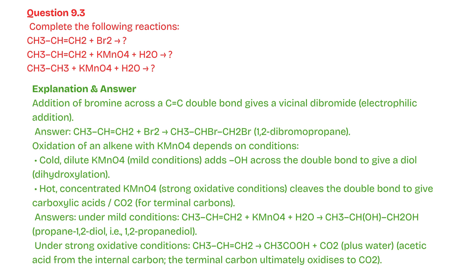Oxidation of an alkene with KMnO4 depends on conditions. Cold, dilute KMnO4 — mild conditions — adds OH across the double bond to give a diol (dihydroxylation). Hot, concentrated KMnO4 — strong oxidative conditions — cleaves the double bond to give carboxylic acids or CO2 for terminal carbons. Under strong oxidative conditions: acetic acid from the internal carbon; the terminal carbon ultimately oxidizes to CO2.